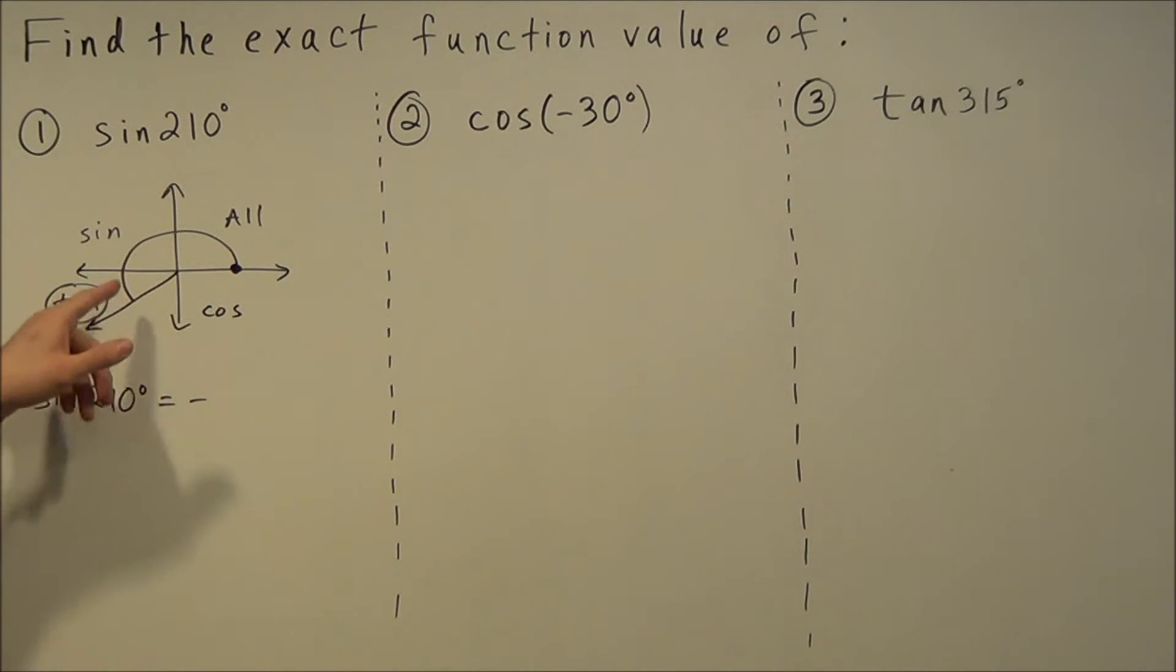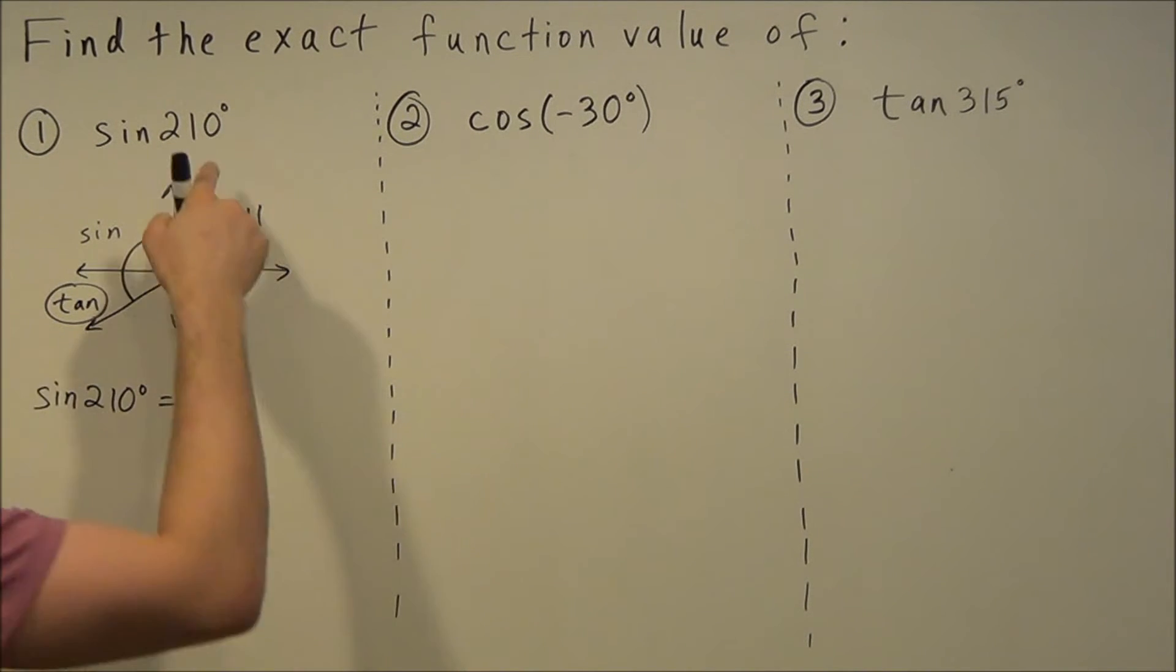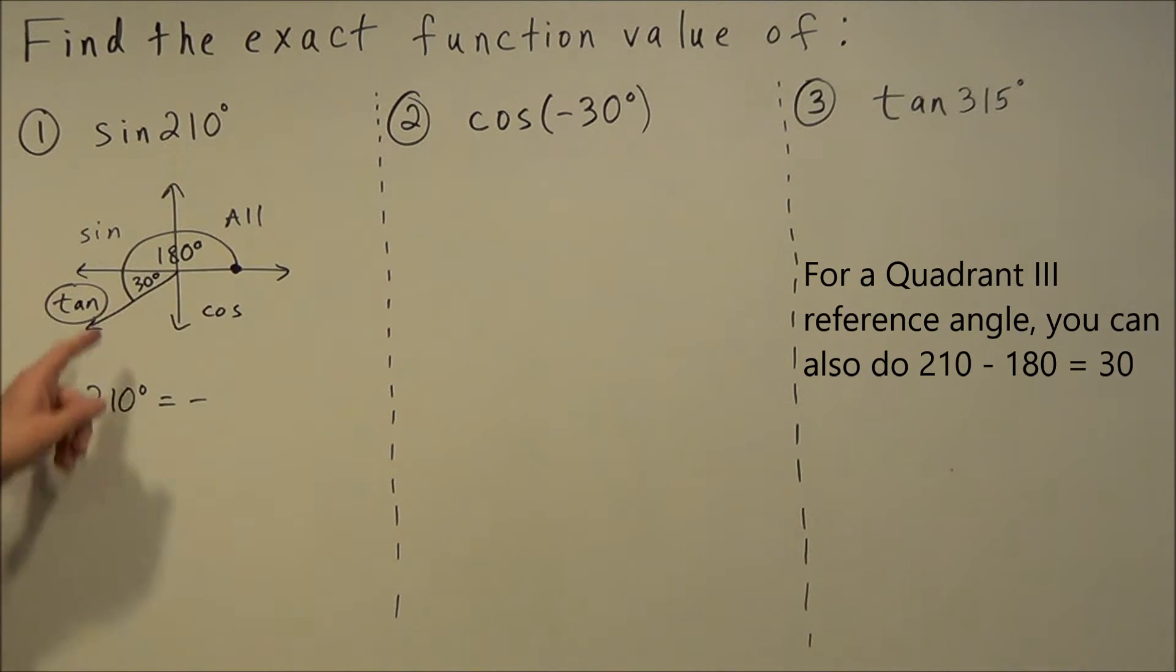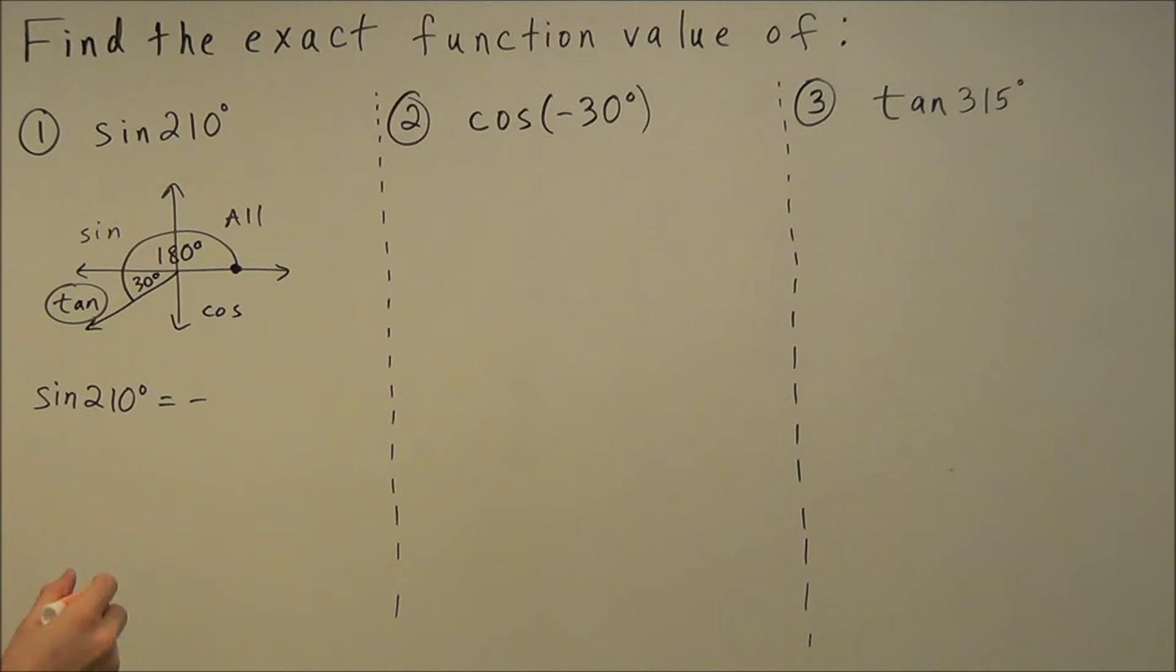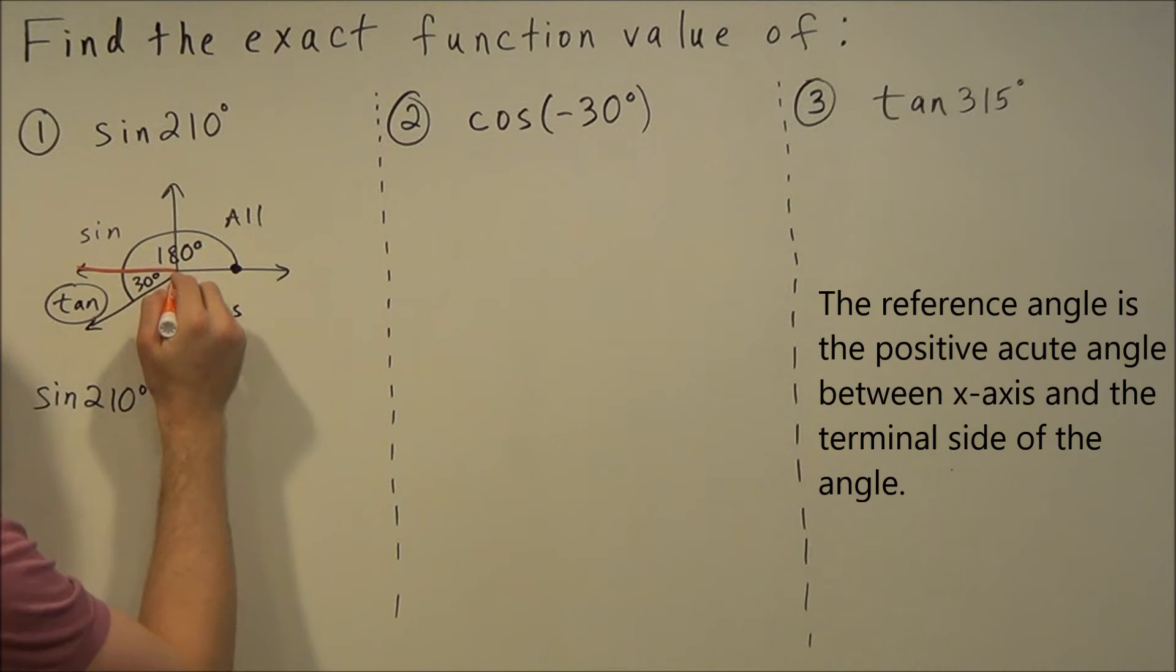The next thing we should find though is what is our reference angle? Well if we go 180 degrees, we have another 30 degrees to go into quadrant three here.